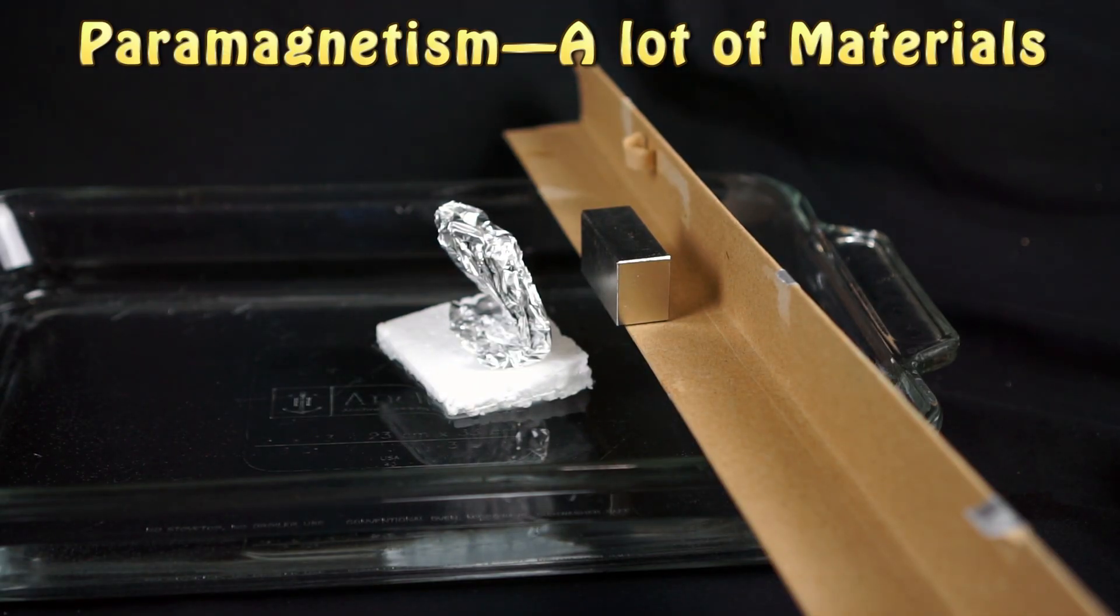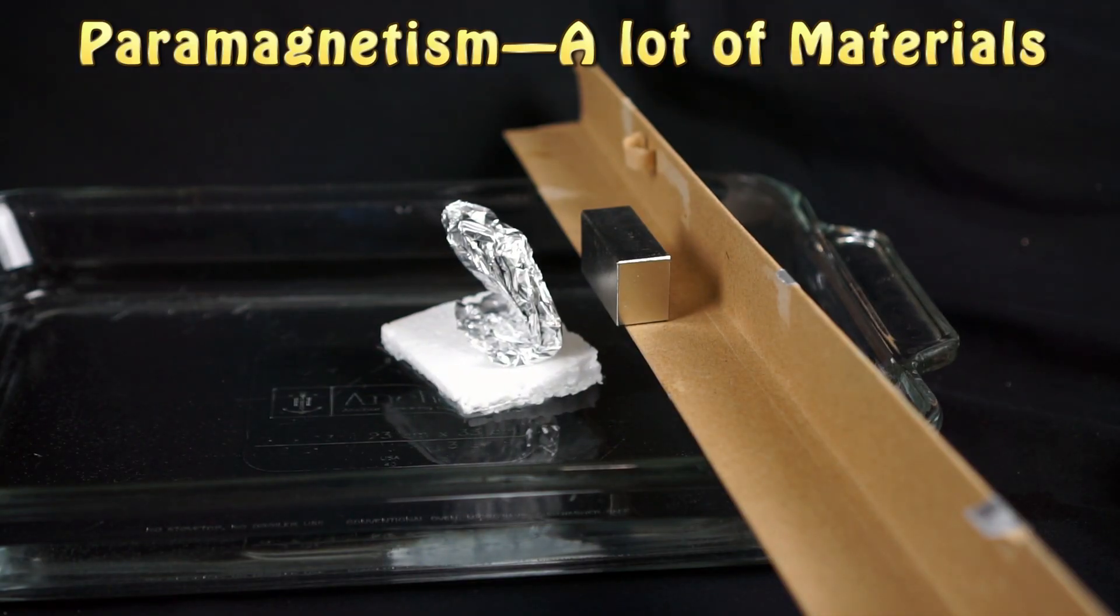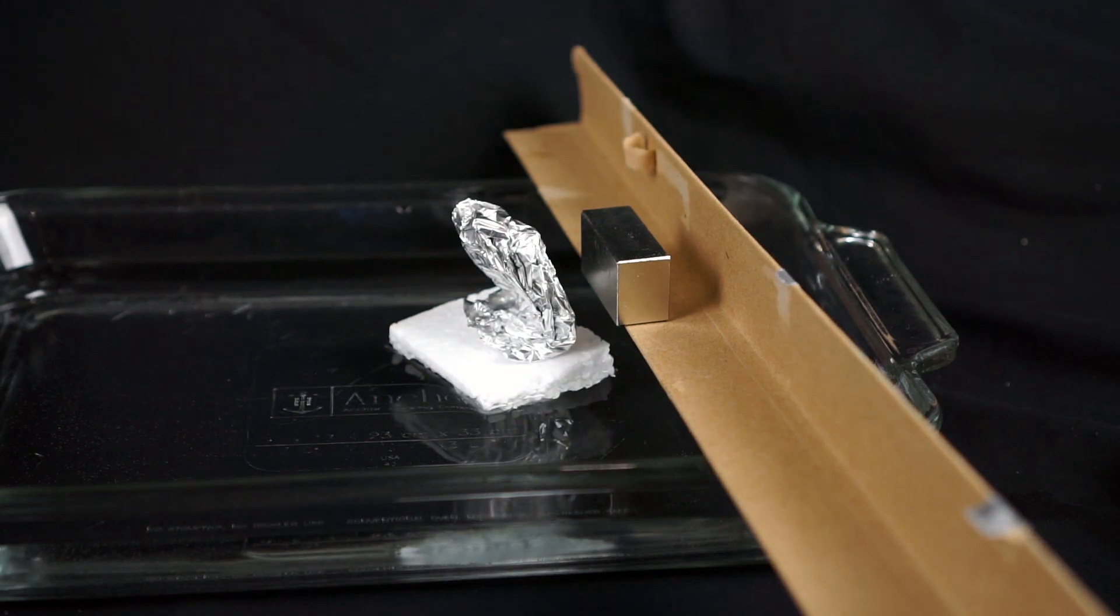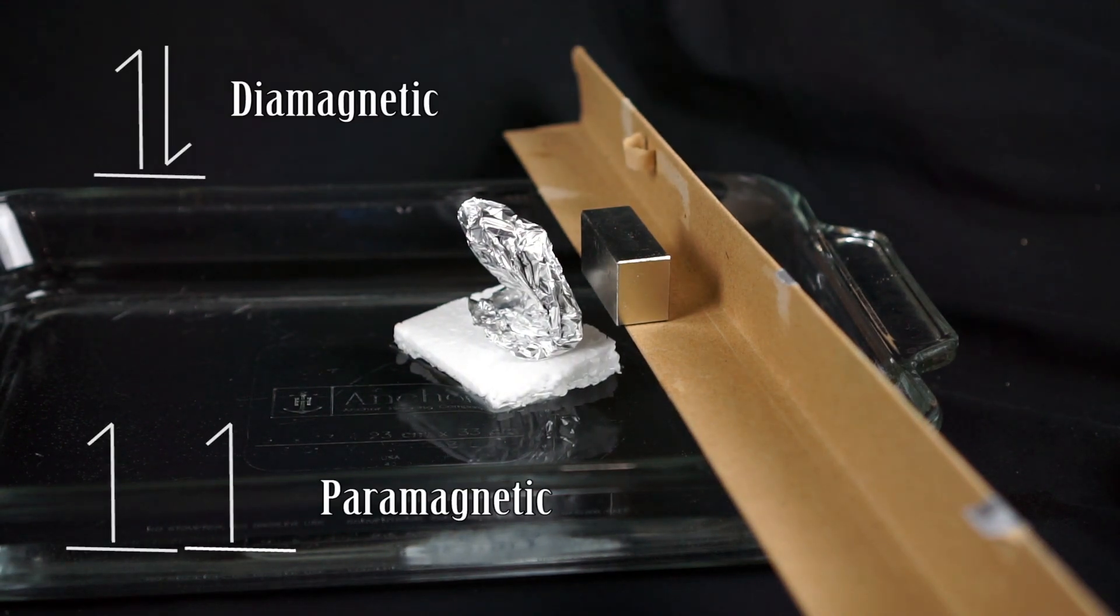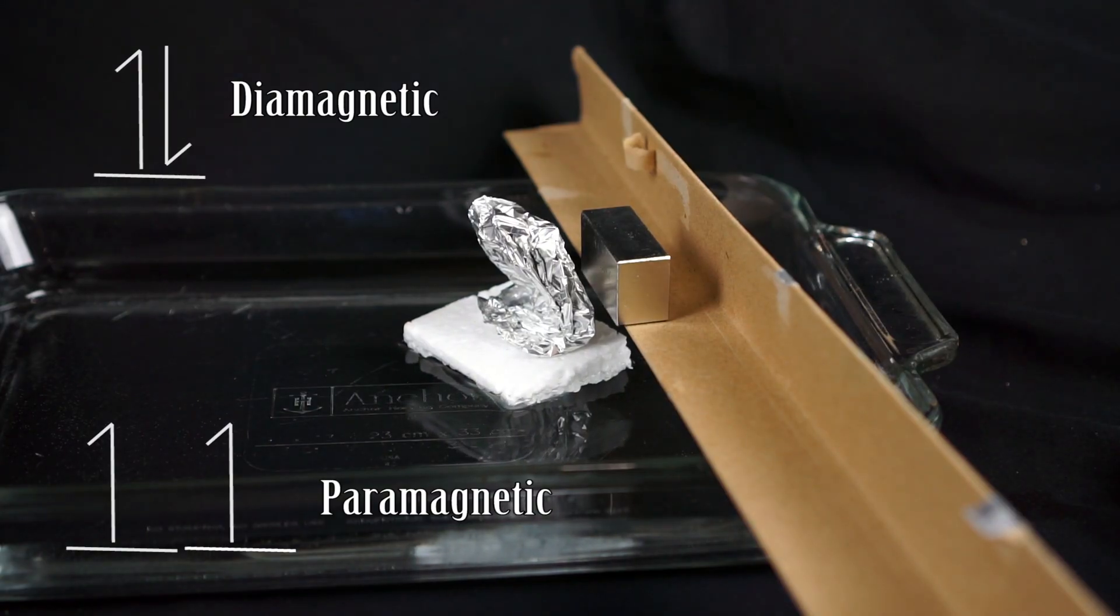So this is paramagnetism and it's really weak. So the reason that things are diamagnetic or paramagnetic is if they have paired electrons. If the electrons are paired in the material, it's diamagnetic. If they're unpaired, it's paramagnetic.